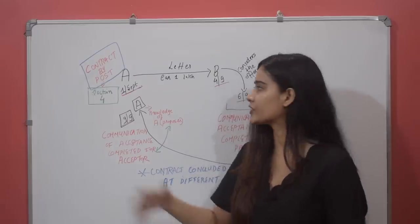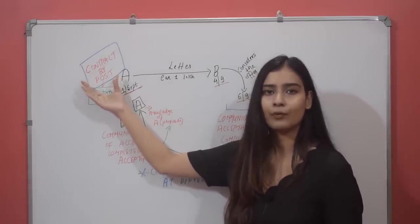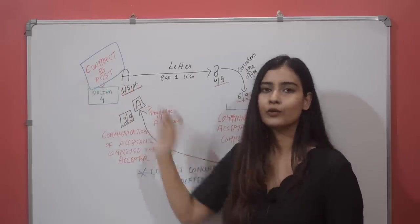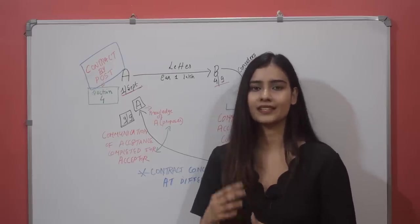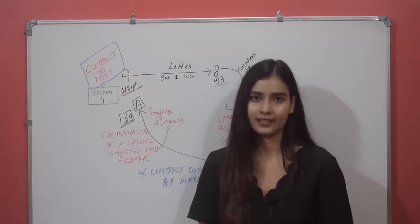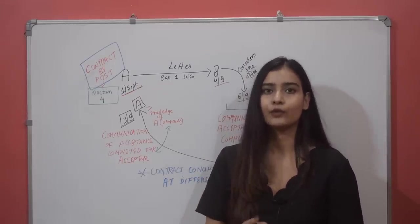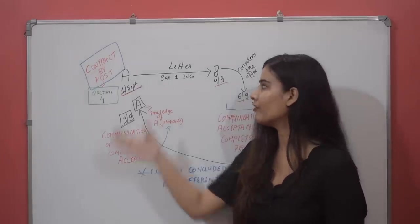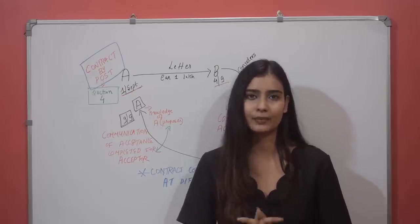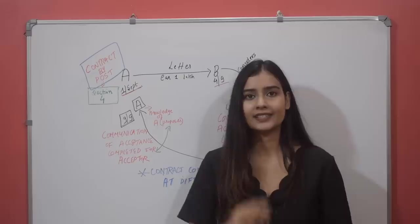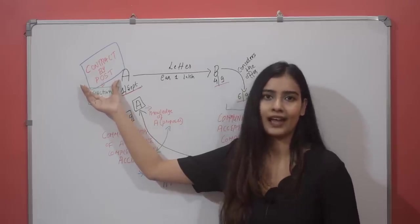One important thing to note is that Section 4 only talks about contract by post — when you contract through letter. The reason is that when the Indian Contract Act was made in 1872, everyone used to use the mode of letter only. That is why the rules were made for letter. This is why there is no mention of the instantaneous mode. So just remember that Section 4 talks about contract by post and tells you the rules of contract by post.